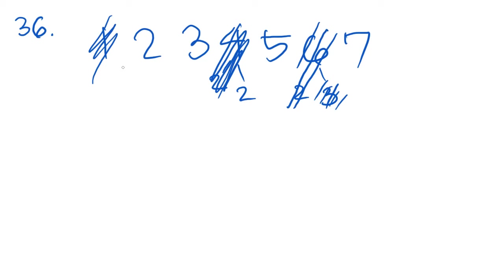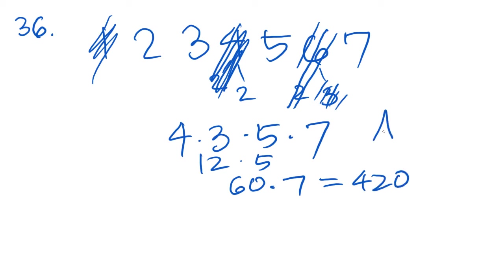So let's take our remaining numbers here and multiply them all together. 2 times 2 is 4, times 3, times 5, times 7, is 12, times 5 is 60, times 7 is 420. 420 is answer choice A.